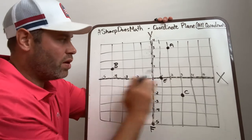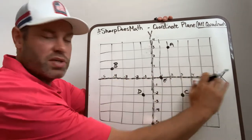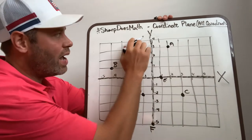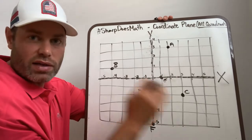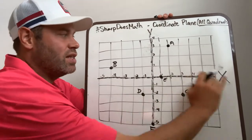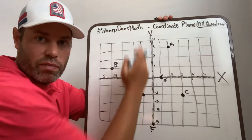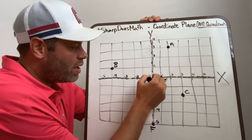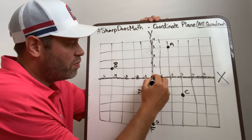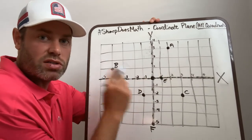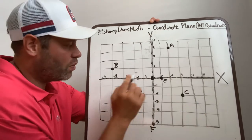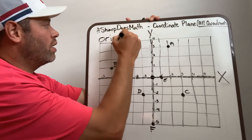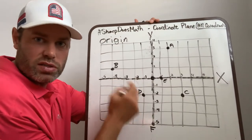This line represents the x-axis, and this line represents the y-axis. X comes before y in the alphabet, so we're going to use this line before we use that vertical y-axis. This point right here in the middle, we've mentioned this in previous videos. That's where we're going to start every time. That point is called the origin. That's where we're going to start.